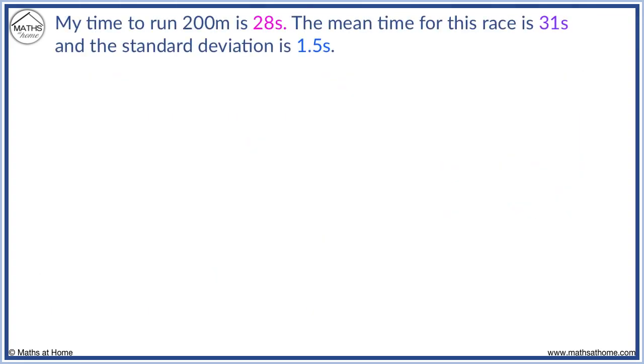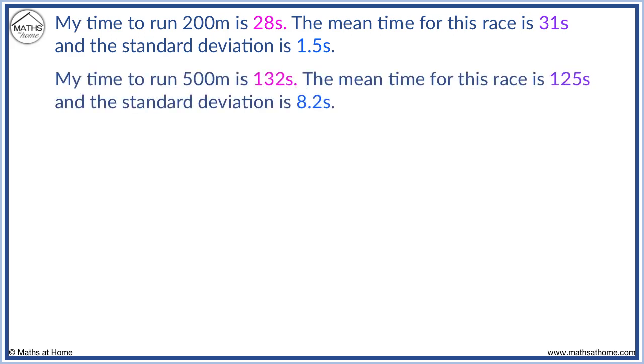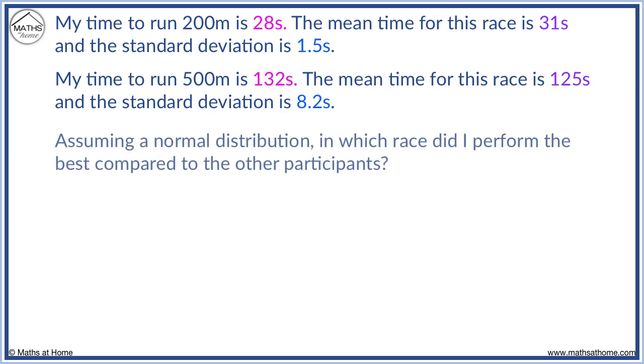For example, my time to run 200 metres is 28 seconds. The mean was 31 seconds and the standard deviation was 1.5 seconds. My time for 500 metres was 132 seconds. The mean was 125 seconds and the standard deviation was 8.2 seconds. Assuming a normal distribution, in which race did I perform the best compared to the other participants?